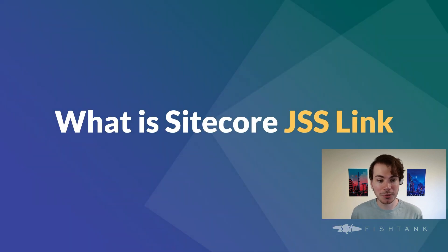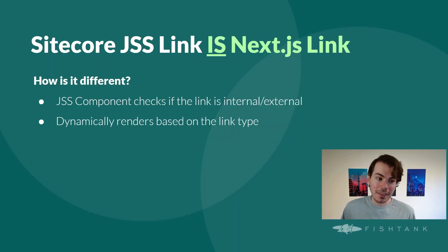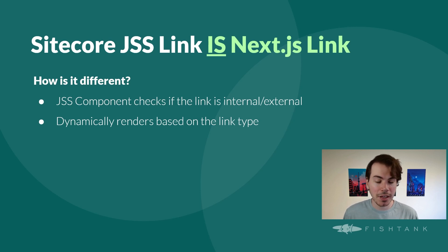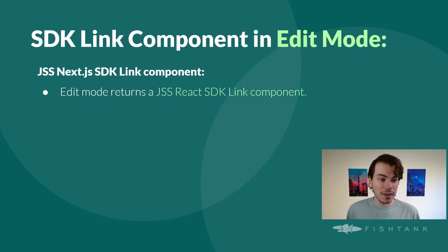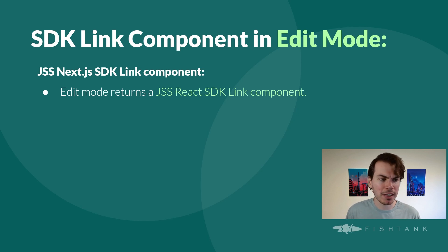We've talked a lot about Next.js Link, but we more frequently use the Sitecore JSS Link as Sitecore developers. The Sitecore JSS Link is the same thing as the Next.js Link — in fact, it's an expansion of it. The main difference is that the JSS component checks if the link is internal or external and then renders using the Next.js Link component or will render a normal anchor tag. It also has some great built-in functionality for Sitecore edit mode with Experience Editor. The JSS Next Link SDK component in normal mode returns a Next Link component, allowing you to control prefetching and all those other attributes directly on that Next Link component.